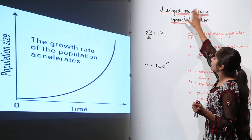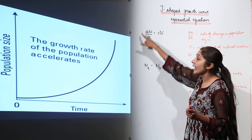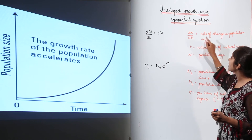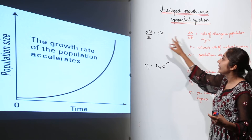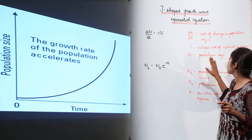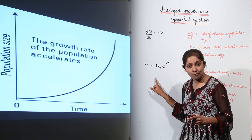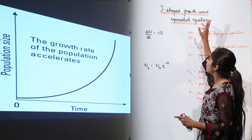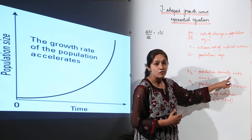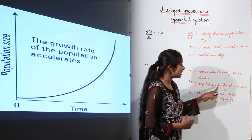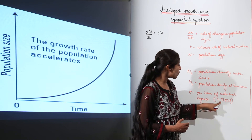So these are the two equations for the J-shaped growth curve. The exponential equation is dn upon dt equals rN, where dn upon dt is the rate of change in population size, r is the intrinsic rate of natural increase, and N is the population size. In integral form, the equation is Nt equals N0 times e to the rt, where Nt is population density at time t, N0 is population density at time 0, and e is the base of natural logarithm equal to 2.71828.